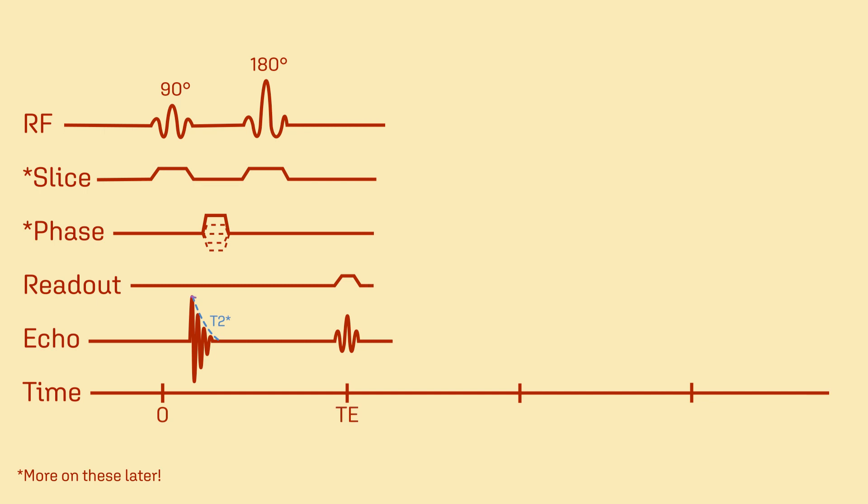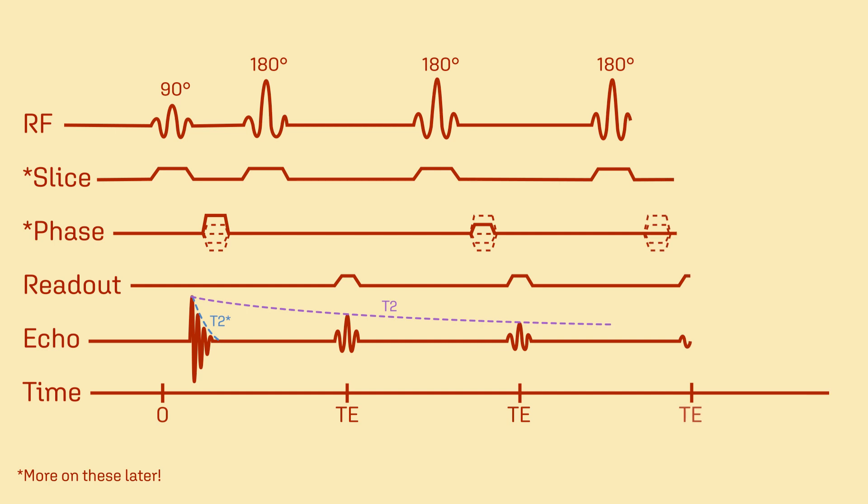We can apply multiple refocusing pulses in an attempt to capture as many echoes as possible. The echoes become successively weaker until the signal dies out completely and the sequence must be restarted. The time between repetition of sequences is called the TR, or time to repetition.